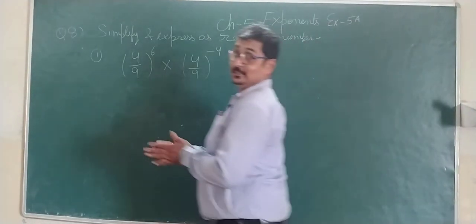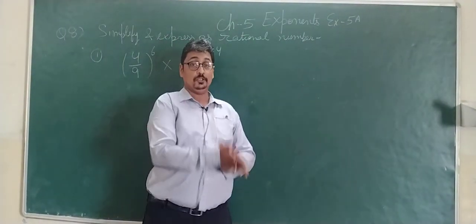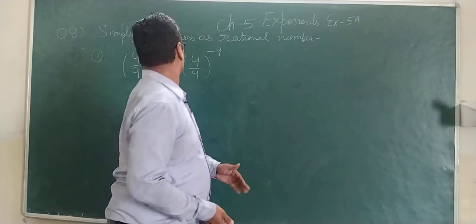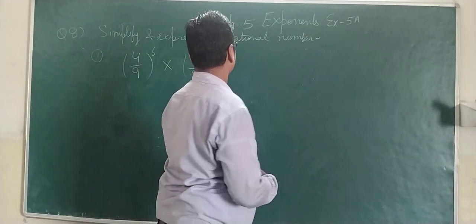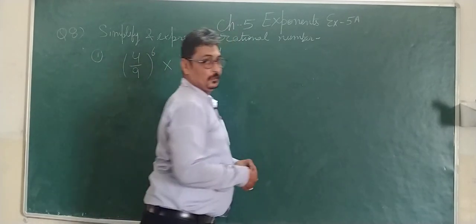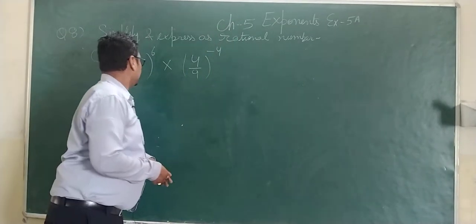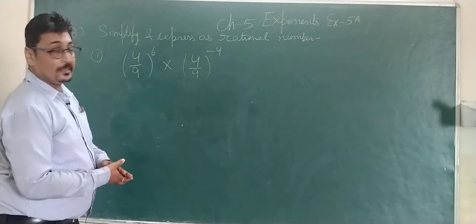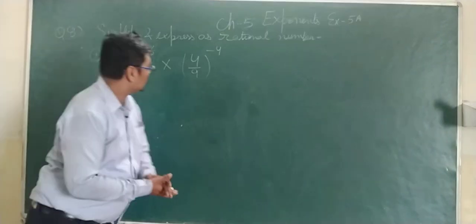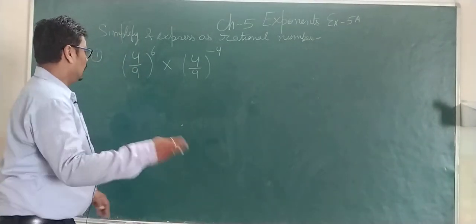Good morning students. Let us start a new question. Simplify and express as a rational number: 4 upon 9 raised to the power 6, multiplied by 4 upon 9 raised to the power minus 4.